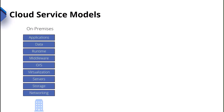To expand on those cloud service models, let's take a deeper look. For on-premises, think about when you did things in the data center: you have your network, your storage, your servers, your virtualization layer from VMware or Microsoft with Hyper-V, your operating systems, your middleware, your runtime, your data, and your applications — and you're ultimately responsible for all of this.